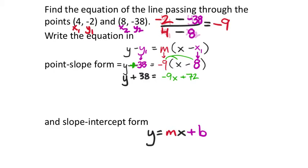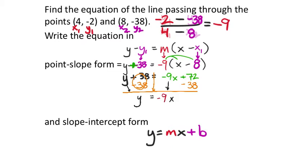This y plus 38 — I've got to get rid of that 38. By 'get rid of' I mean zero it out. So I'm going to subtract 38 from both sides, which allows me to drop just the y by itself. The 38 has zeroed out. My negative 9x drops down still as negative 9x. I had to combine that negative 38 with its like term on the right, which is the constant 72. The calculator tells me the result is positive 34.